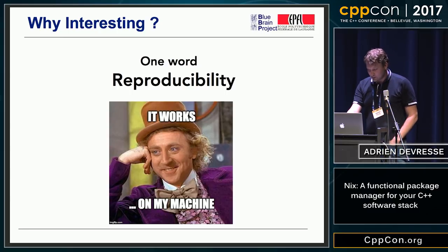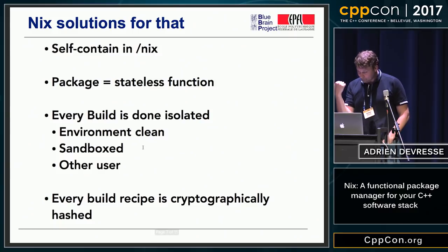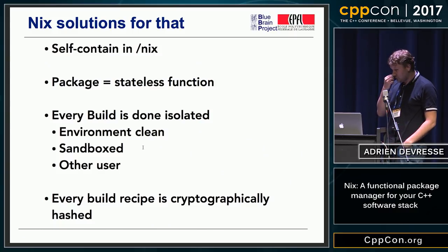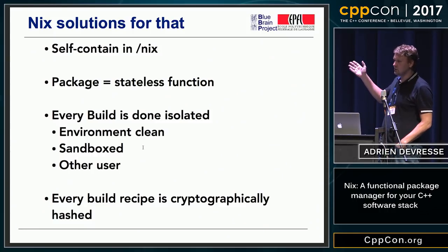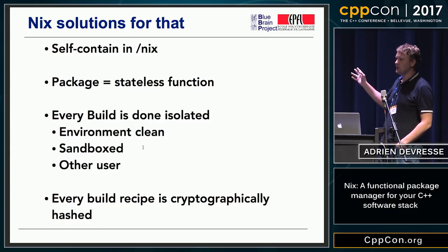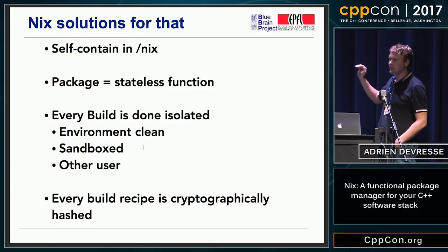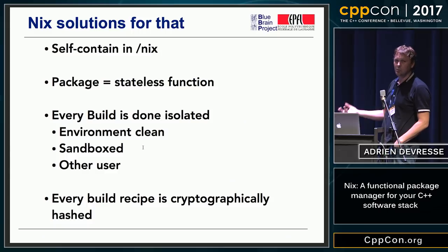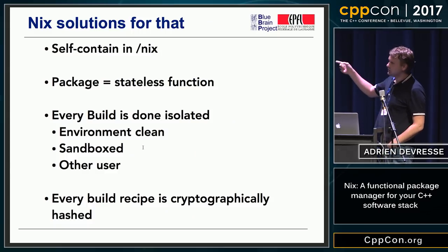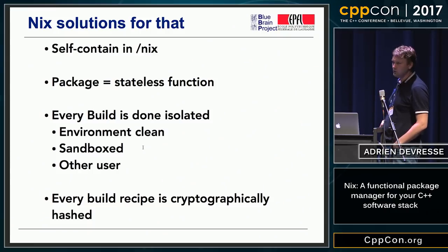The reason why Nix is different is because it has been programmed by functional programmers, in fact. Everything is self-contained inside /nix/store. Everything you build is self-contained inside this prefix, including even glibc, the compiler itself, and everything. Every package you declare is a stateless function — you just have a set of build inputs when you build your package, and you get an output, but you can reuse another function. And the beauty of a stateless function is that you can cache it, and you can get binary distribution out of that.